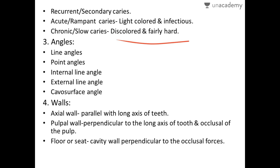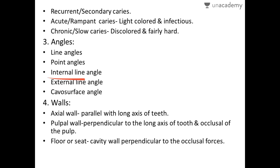Now, the various angles in cavity preparation. A line angle is the junction of two walls that forms a line — wherever two surfaces meet, they form a line angle. A point angle is a point at the junction of three walls in all three planes — transverse, oblique, or sagittal — wherever these three points meet, they form a point angle.